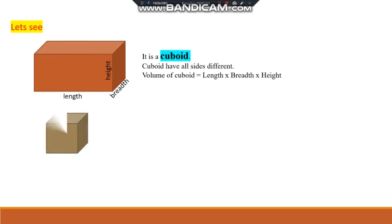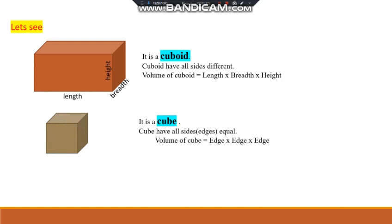See another picture. The condition for a cube is that it has all sides equal — that means the edges are equal. The formula to find the volume of a cube is: edge × edge × edge. These two formulas — volume of cuboid = length × breadth × height, and volume of cube = edge × edge × edge — are used for solving the examples.